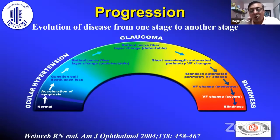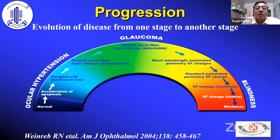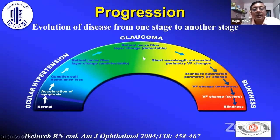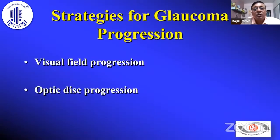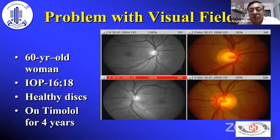Because glaucoma is a chronic progressive neuropathy, diagnosing progression is very important. Progression is defined as the evolution of disease from one stage to another — if there are detectable nerve fiber layer changes that increase, or if new nerve fiber layer changes begin, that can be seen on OCT. I'm going to talk about what progression is and how we diagnose it on imaging technologies.